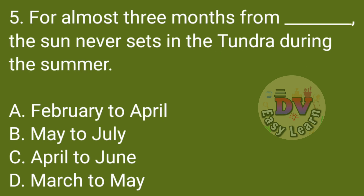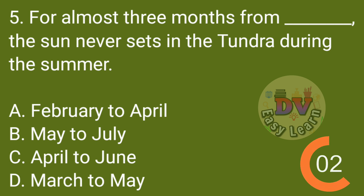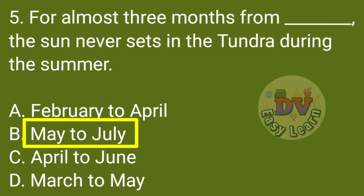Q5: For almost 3 months, the sun never sets in the Tundra during the summer. Correct answer: May to July.